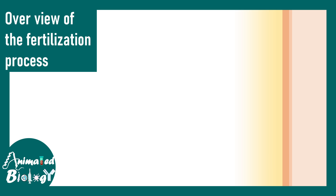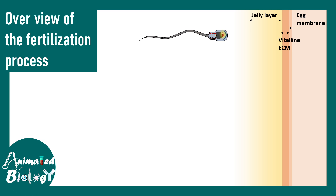Now let's discuss the fertilization process itself. After navigation is solved, fertilization is still a challenge because the egg has several layers: a jelly coat layer, an extracellular matrix layer called the vitelline membrane or vitelline ECM, and finally the egg plasma membrane — all of which must be penetrated.